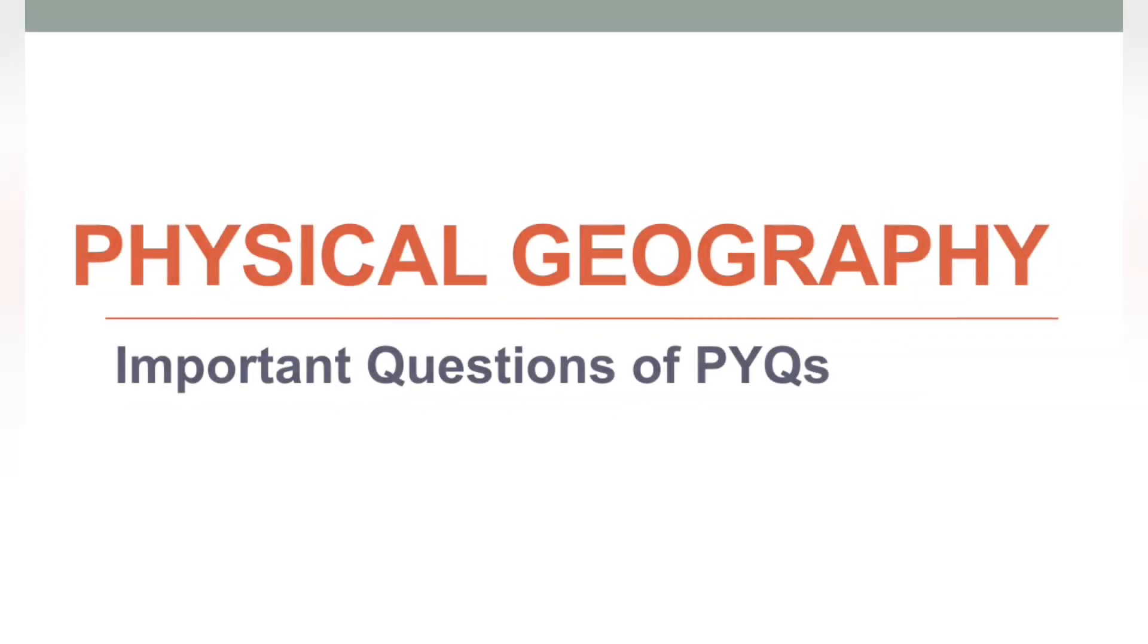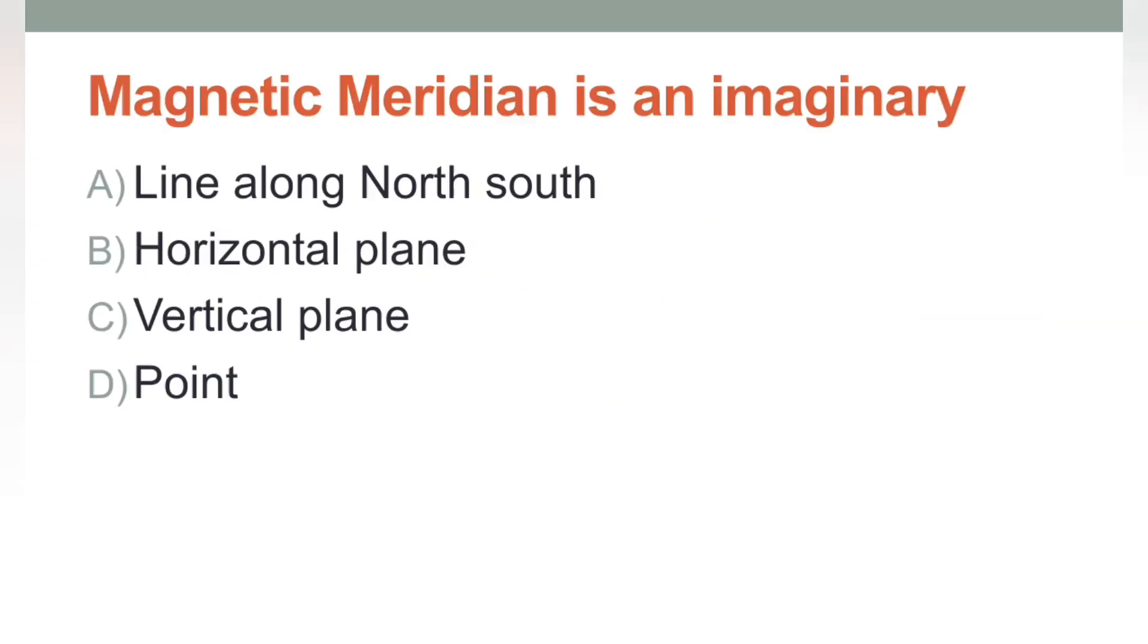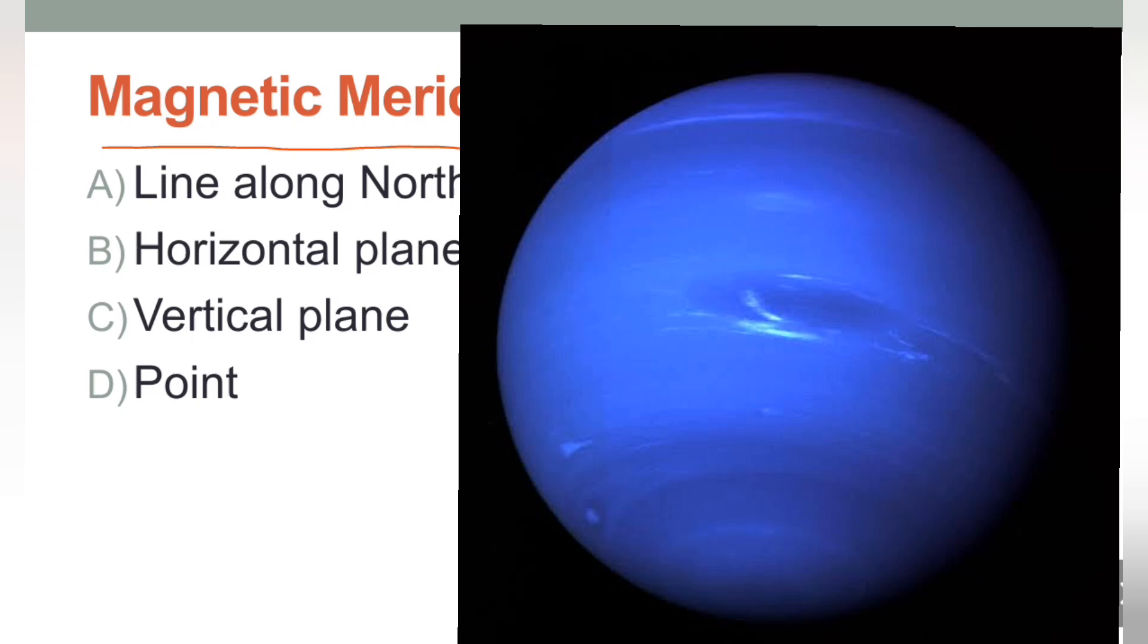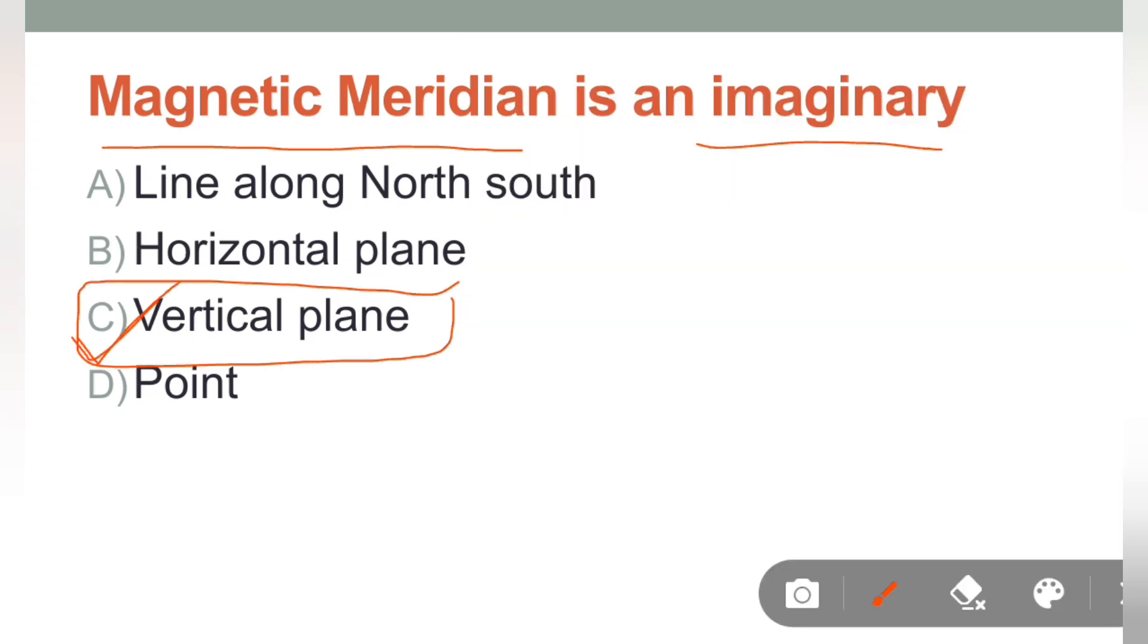Hello everyone, welcome to our channel. Today in this video, I am going to provide you some important physical geography questions which were asked in your PYQs and many important questions that can be repeated in your upcoming exams too. So let's get started. Question number 1 is: Magnetic meridian is an imaginary what? The correct answer for this question is vertical plane. The magnetic meridian is an imaginary Earth in respect of a vertical plane.